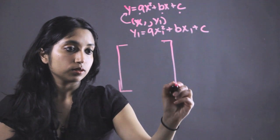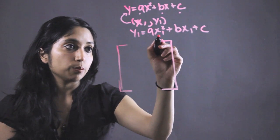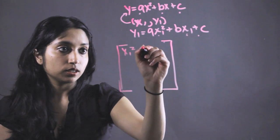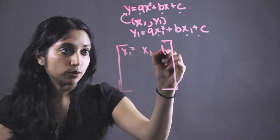So we're going to start by taking these three values in here. So it would be x1 squared, x1, and 1.